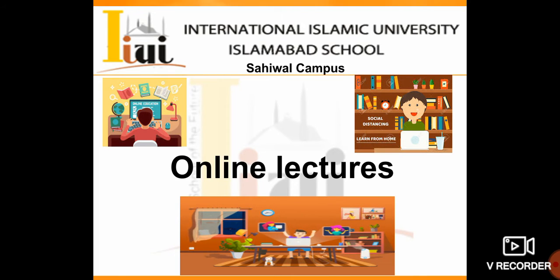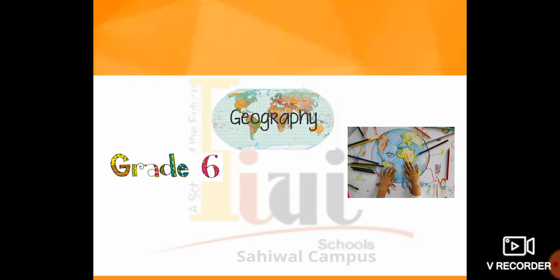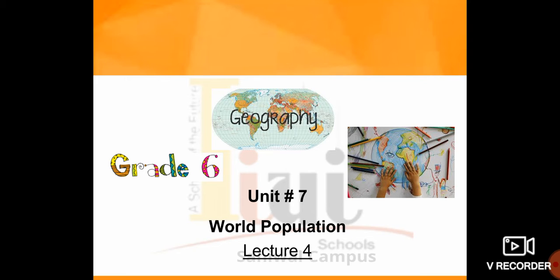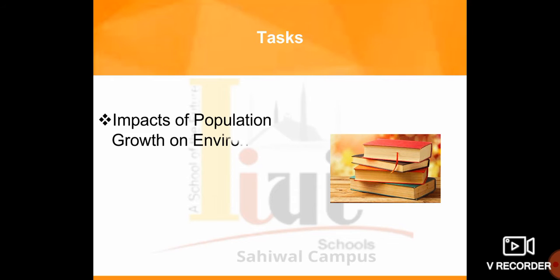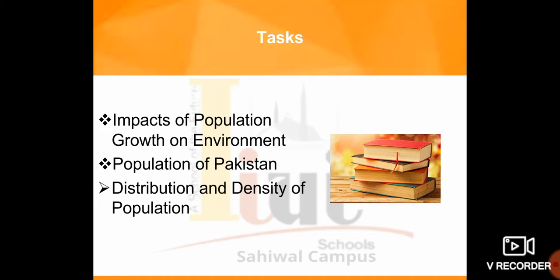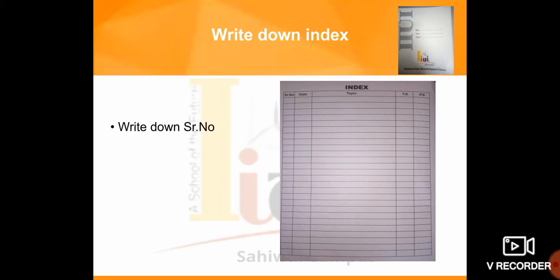Assalamu alaikum, this is International Islamic University Islamabad School Sahiwal Campus Online Lectures. This is the lecture of Grade 6 Geography, Unit number 7. The unit name is World Population. Students, this is our fourth lecture. In the previous three lectures we have learned about the population of the world. In this lecture we will learn about impacts of population growth on environment, population of Pakistan, and the subtopic distribution and density of population. First of all, students, write down the index, serial number, date, and topic on your notebook.